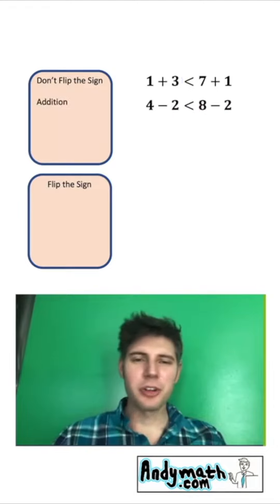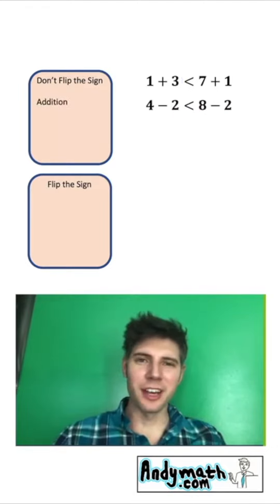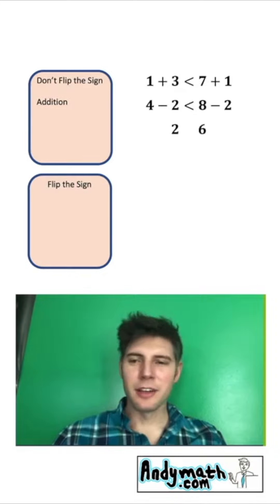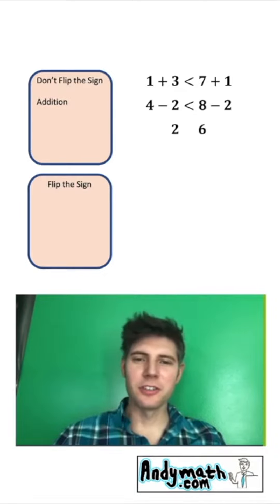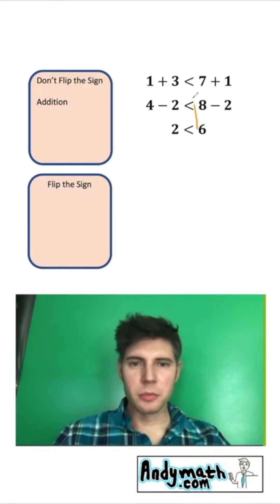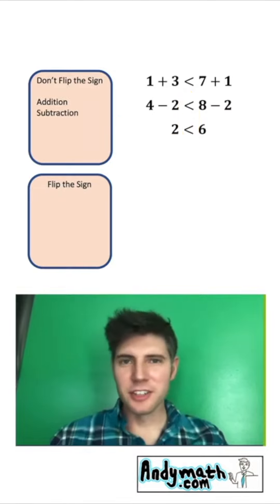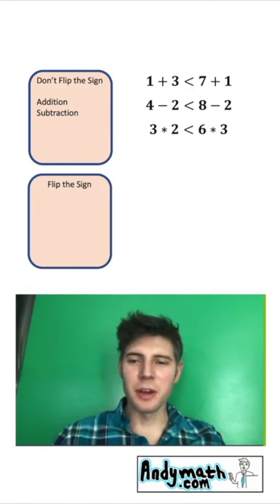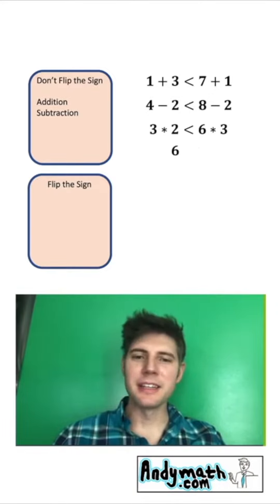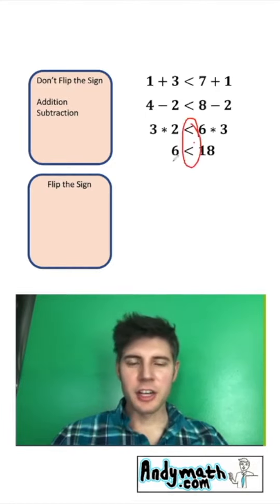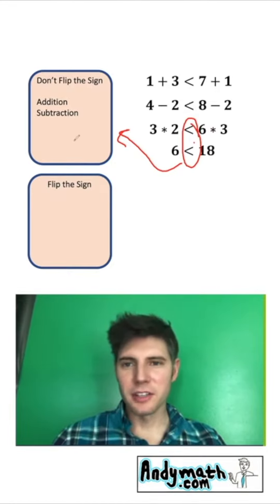Next, subtraction: subtract 2 from both sides. 4 minus 2 gives us 2, and 8 minus 2 gives us 6. Six is greater, and the sign didn't change, so let's add subtraction to this box. For multiplication: multiply both sides by 3. Three times 2 is 6, and 6 times 3 is 18, which is larger. The sign did not change, so let's add multiplying by a positive number. For division by a positive number: divide both sides by 2. Six divided by 2 is 3, 18 divided by 2 is 9 — the sign did not change.